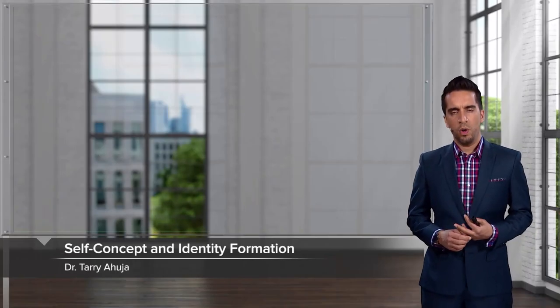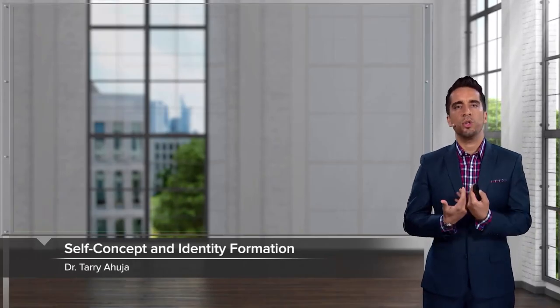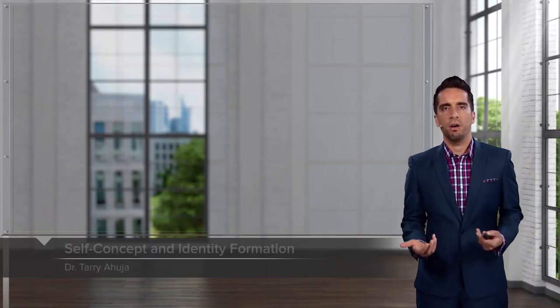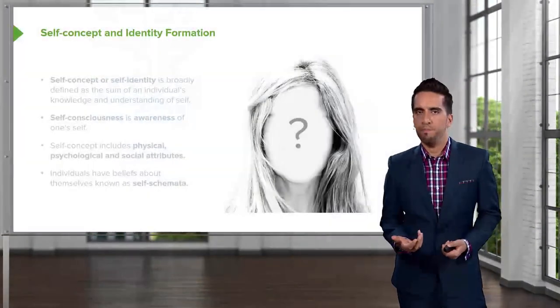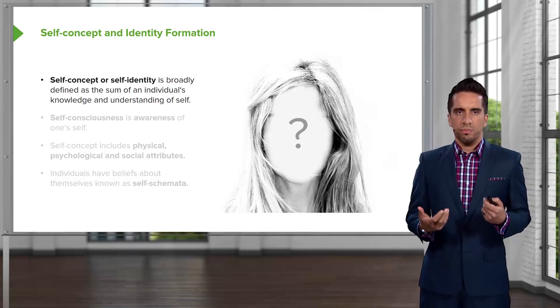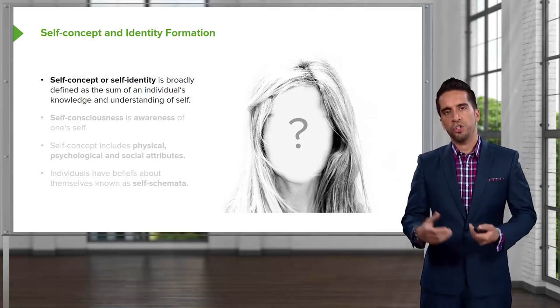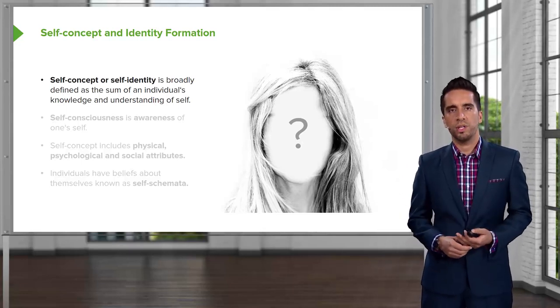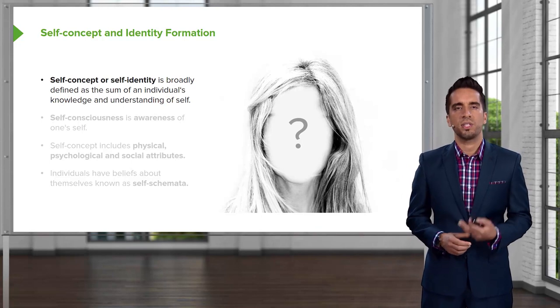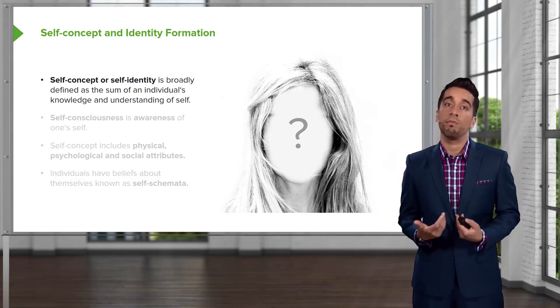Let's talk about what you think about yourself and how you think about yourself. These are notions of self-concept, self-identity, and social identity. Self-concept and self-identity are terms used interchangeably, and it's defined as the sum of an individual's knowledge and understanding of self.